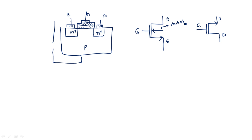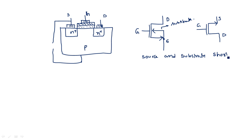Under normal bias conditions, if you do not want to disturb the threshold voltage, the substrate and source are connected together — short-circuited. When you short-circuit substrate and source, you are operating with the normal threshold voltage without violating its operation.